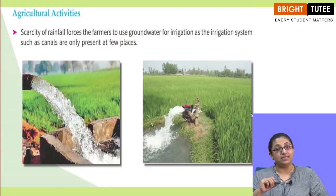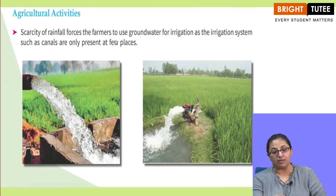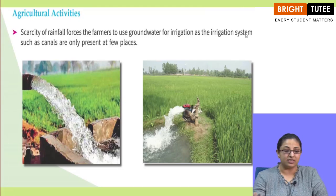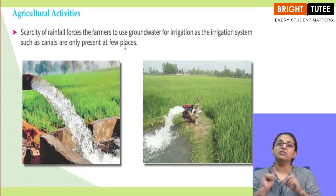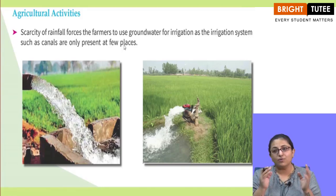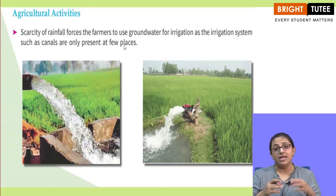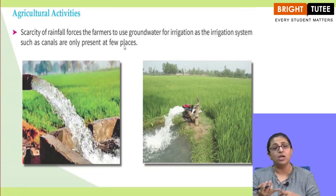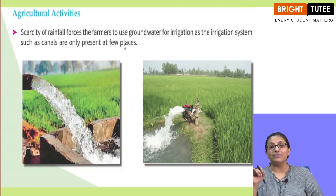The third factor is agricultural activities. Scarcity of rainfall forces farmers to use groundwater for irrigation, as irrigation systems such as canals are only present at few places. So farmers draw water out from the ground using tube wells, hand pumps or big pumps for irrigating their fields. This is one reason why groundwater and the water table deplete.